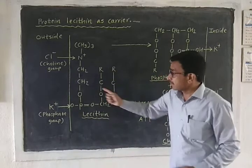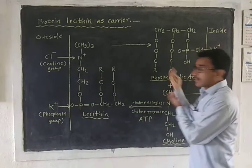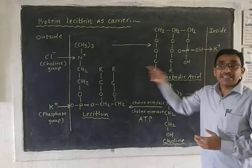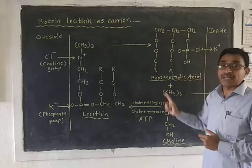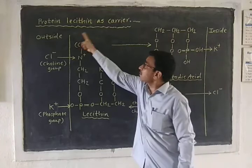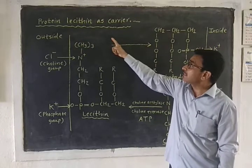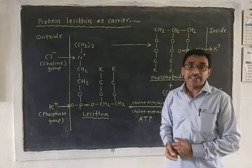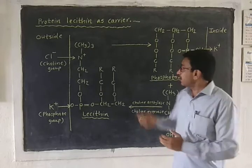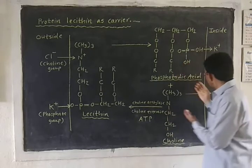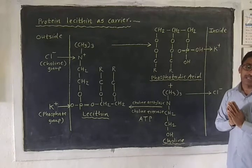In this way, the cations and anions are carried by the lecithin. Lecithin is a protein, and hence this theory is called Protein Lecithin as Carrier, because lecithin acts as a carrier for cations and anions, which are released into the protoplasm of the cell.